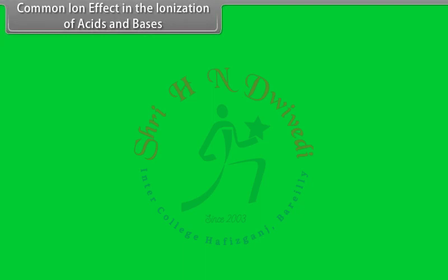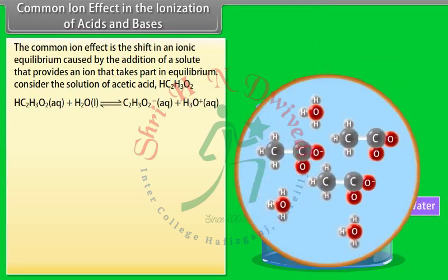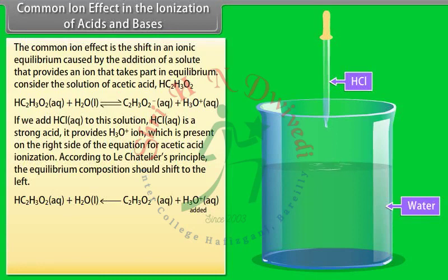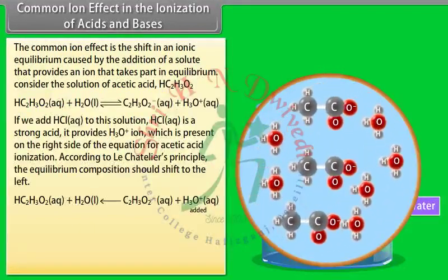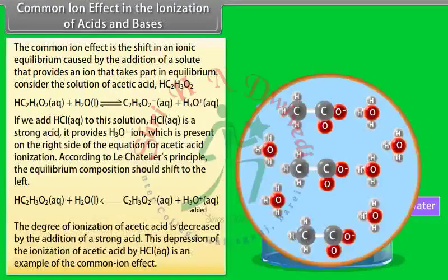The common ion effect is the shift in an ionic equilibrium caused by the addition of a solute that provides an ion already present in the equilibrium. Consider acetic acid solution: if HCl is added, it provides H₃O⁺ ions present on the right side of the equation. According to Le Chatelier's principle, the equilibrium shifts left, decreasing the degree of ionization of acetic acid. This depression of ionization by HCl is an example of the common ion effect.